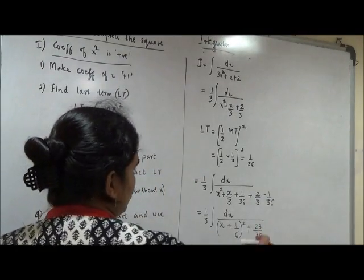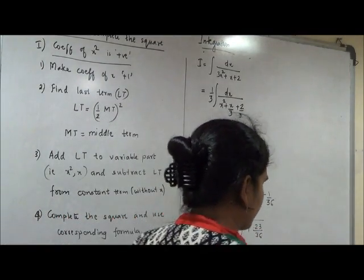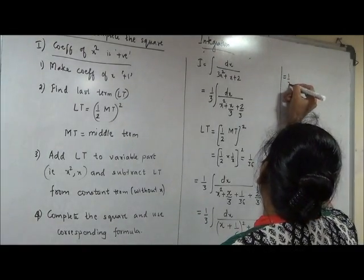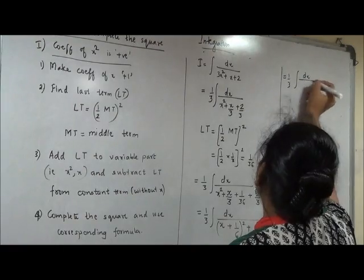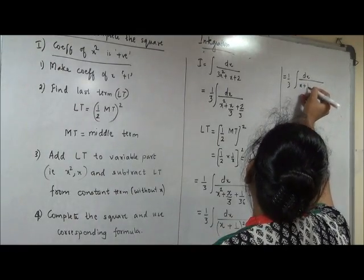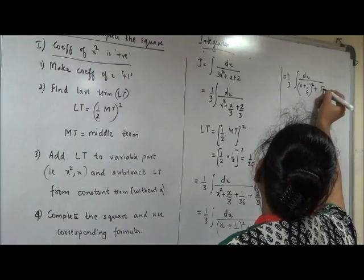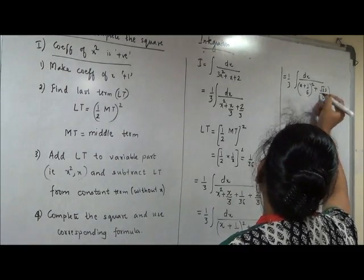Now it's not necessary that always you will get a number whose square root can be written. What I get is 1 by 3 x plus 1 by 6 bracket square plus root 23 upon 6 bracket square.